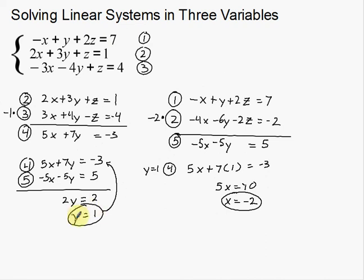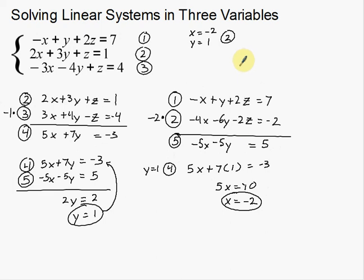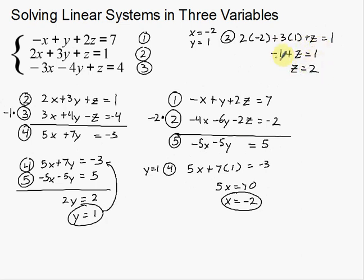Now I've solved for another variable. I'm going to take both x and y and go back to my original equations to solve for z — the first variable I eliminated. I'll use equation two since it has coefficients of two, three, one, and one with no negatives, making it the easiest. Plugging x = negative 2 and y = 1 into equation two: 2(negative 2) + 3(1) + z = 1. That's negative 4 plus 3, which is negative 1, plus z equals 1. So z is equal to 2.